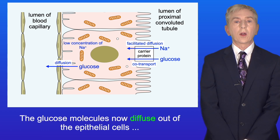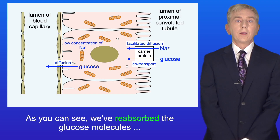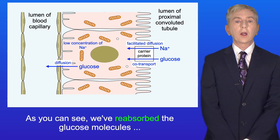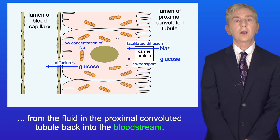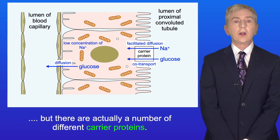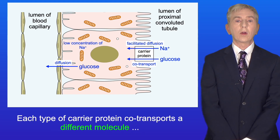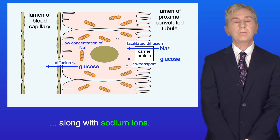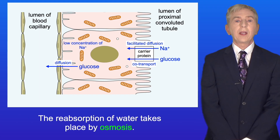The glucose molecules now diffuse out of the epithelial cells and back into the bloodstream. So we've reabsorbed the glucose molecules from the fluid in the proximal convoluted tubule back into the bloodstream. There are actually a number of different carrier proteins, and each type co-transports a different molecule along with sodium ions. A large volume of water is also reabsorbed back into the blood, and the reabsorption of water takes place by osmosis.